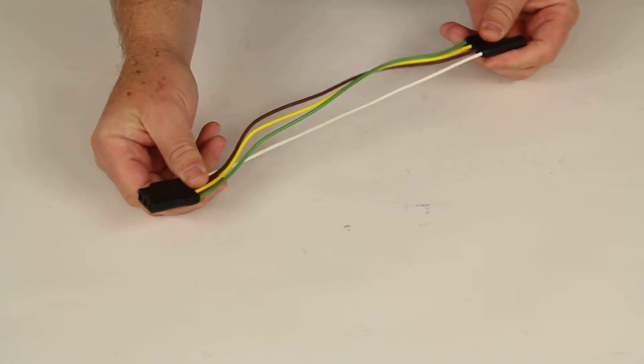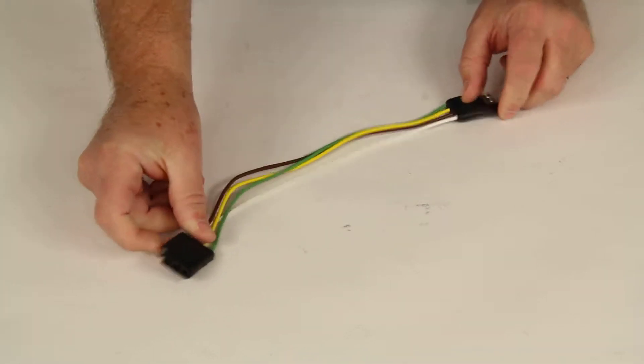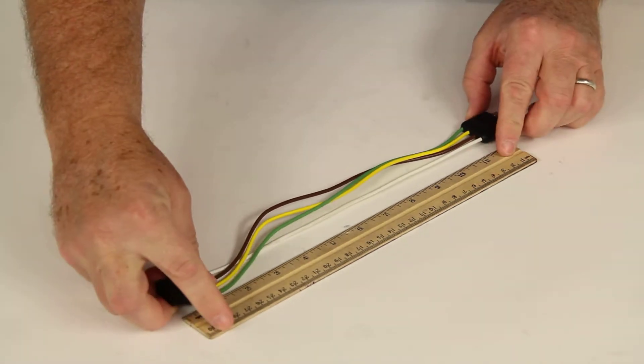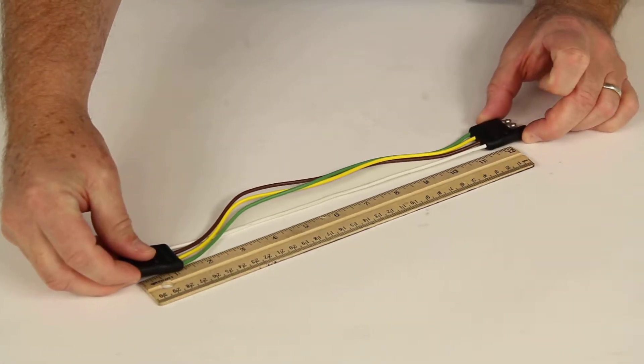This wire will extend your wiring about 12 inches. I'm trying to give you an idea here. Put a ruler on it. You can see it gives you about an extra 12 inches in length.